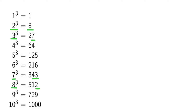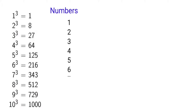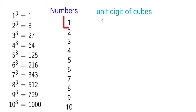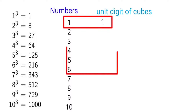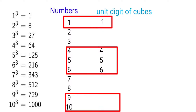For the rest of the cases like 2, 3, 7, and 8, the unit place is different. The cube of 2 is 8, so unit place is 8. The cube of 3 is 27, so unit place is 7. For numbers 1, 4, 5, 6, 9, and 10, the unit digit of the cube of a number remains the same.